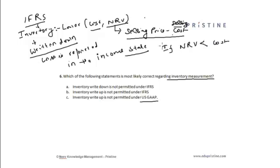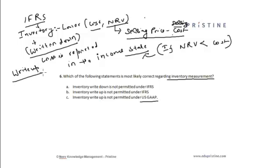The write-down loss is reported in the income statement when NRV is less than cost. However, if in the future the net realizable value increases, we can perform a reversal of the inventory write-down — a write-up — but only up to the original cost value. The net gain or reversal of loss is reported as a decrease in cost of goods sold.